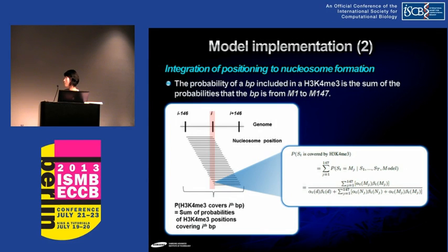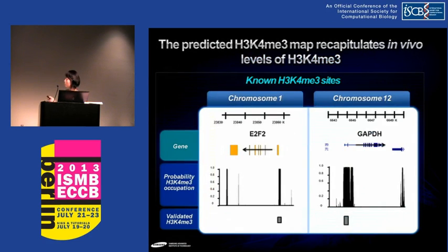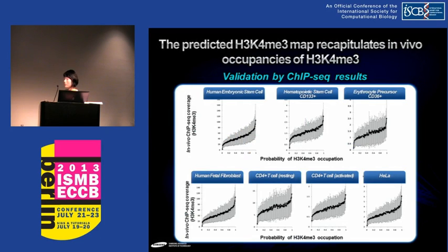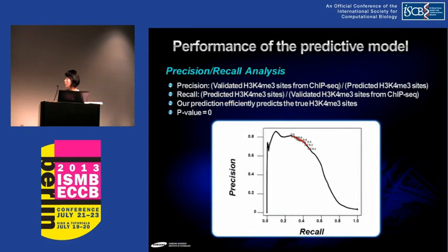Our aim is to determine if one base pair will be included in an H3K4 trimethylated nucleosome. We incorporate all the probability including this one base pair. From this method, we examined how well our prediction worked compared to known experimental data. E2F2 and GAPDH are well known to have their promoter regions forming H3K4 trimethylation, and their promoter sequence context was actually predicted to have high H3K4 trimethylation. We can compare at one base pair resolution our probabilistic prediction with ChIP sequencing data in various cell types, and we see the correlation is highly significant. We measured performance by precision and recall analysis, and it turned out to perform very well.